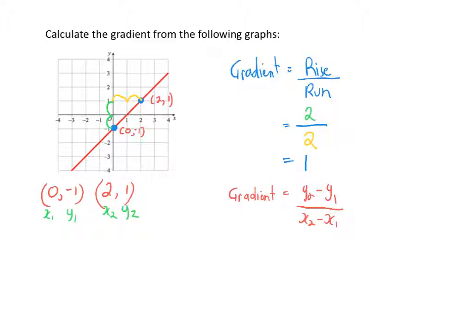Going back to my formula and substituting in my values: y2 minus y1 is going to be 1 minus negative 1, and x2 minus x1 is 2 minus 0. So that's going to equal 1 minus negative 1 is 2, and 2 minus 0 is 2. So 2 divided by 2 is equal to 1. The gradient of the straight line using my second formula option also gives me an answer of 1.